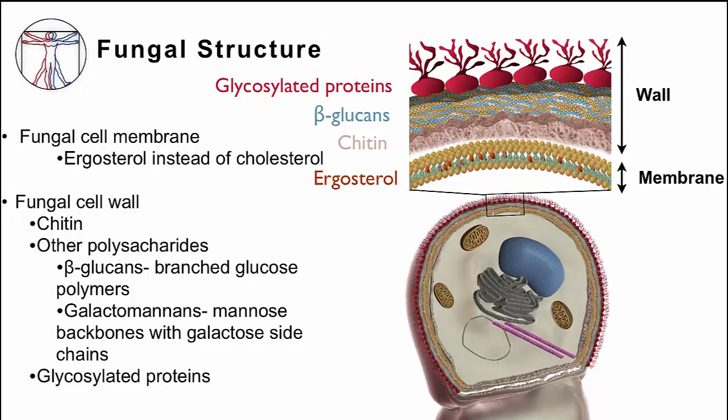As I mentioned before, fungi are eukaryotes. So they have organelles, mitochondria, and a nucleus just like our cells. It's all surrounded by a lipid bilayer just like our cells. But fungi have their own unique features. Their membrane doesn't contain cholesterol, but a similar lipid called ergosterol — you can see it in the drawing, the brown material pointed to by the arrow. Surrounding the membrane is a cell wall that provides rigidity and shape. It's different from bacteria and plants and is made up of different types of polysaccharides.